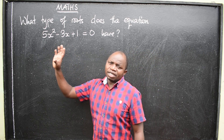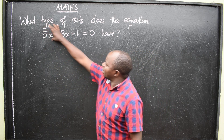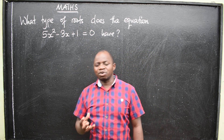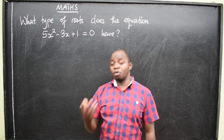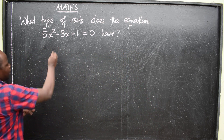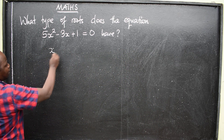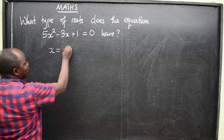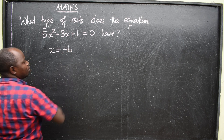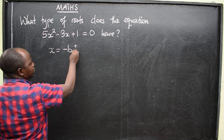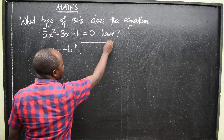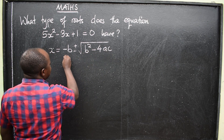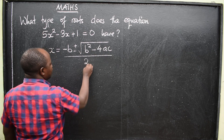This is a quadratic equation, and a quadratic equation has what we call the quadratic formula. I'll write the quadratic formula here: x is equal to negative b, positive or negative, with a square root of b squared minus 4ac, everything divided by 2a.